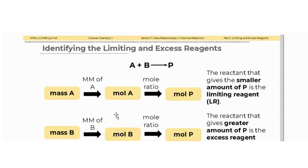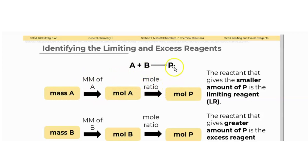To identify the limiting and excess reagents, stoichiometric calculations are necessary. Consider a reaction with A and B as reactants and a product. The masses of the reactants must be compared by converting to moles using their respective molar masses. The number of moles of each reactant is then divided by its stoichiometric coefficient from the balanced chemical equation to determine which reactant is limiting.